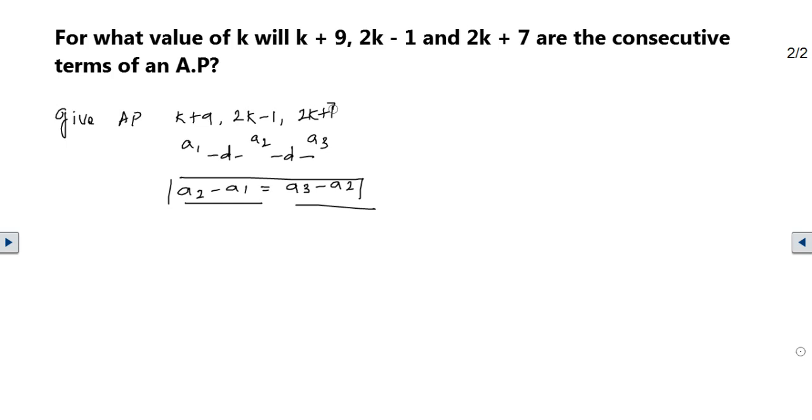Now, put these values here. a2 is 2k - 1 minus (k + 9), which equals 2k + 7 minus (2k - 1).